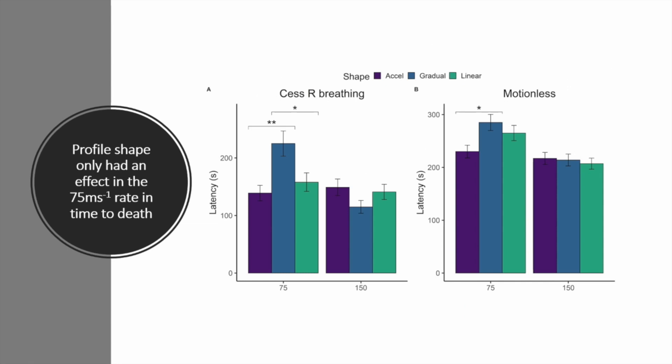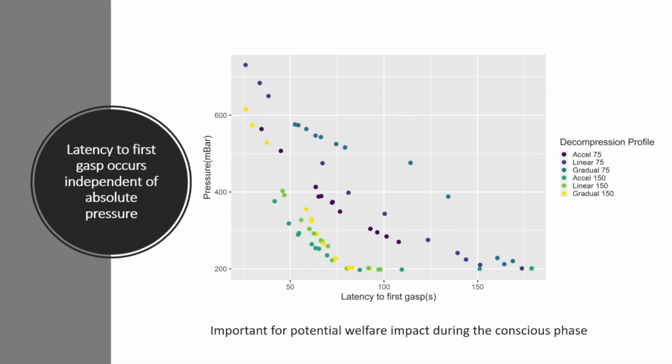When we looked at the effect of shape within each rate, we only found an effect of shape on the time taken to cease rhythmic breathing and time to death. The effect of shape was only present in the slower rate. The gradual 75 profile resulted in significantly longer latencies to cease rhythmic breathing compared to both accelerated and linear profiles at that given rate, and we found longer latencies to motionless compared to the accelerated shape profile but not the linear. When we look at pressure correlated with the latency to first gasp, we don't see a given pressure threshold at which this is occurring. Instead, the pressure at first gasp varies according to the different profiles, suggesting different hypoxic loading, which is informative for future work in conscious mice.